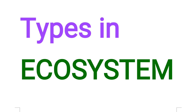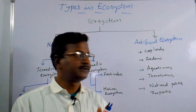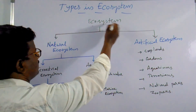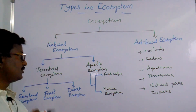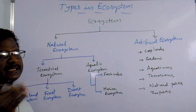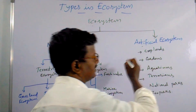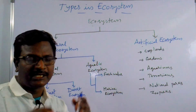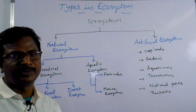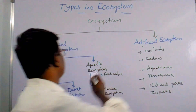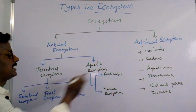Now we will discuss about different types of ecosystems. There are two types: natural ecosystems and artificial ecosystems. Natural ecosystems are those naturally formed in the habitat. Artificial ecosystems are man-made ecosystems. Natural ecosystems are further divided into two types: terrestrial ecosystems and aquatic ecosystems.